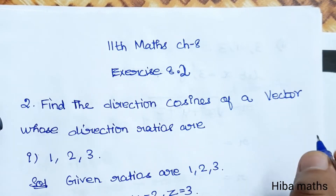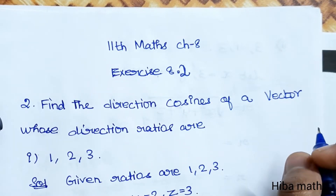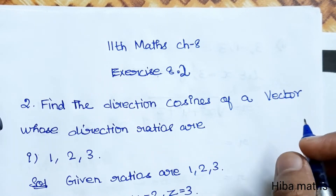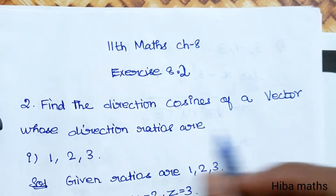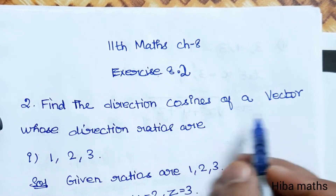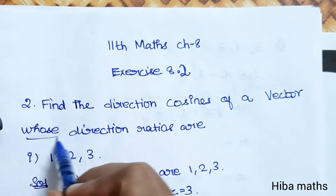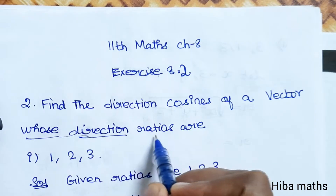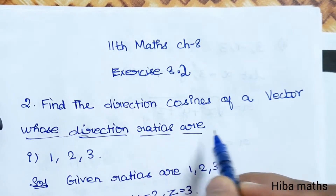Hello students, welcome to Hibamax, 11th Standard Max, Chapter 8, exercise 8.0 second question. Find the direction cosines of the vector whose direction ratios are given.